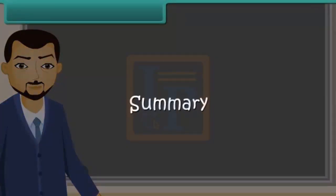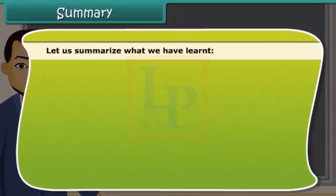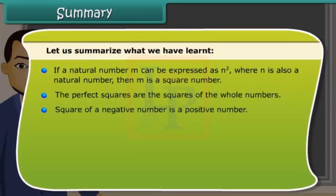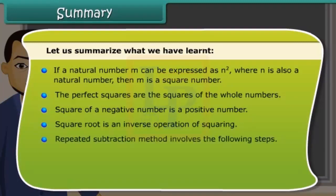Summary. Let us summarize what we have learned. If a natural number M can be expressed as N square, where N is also a natural number, then M is a square number. The perfect squares are the squares of the whole numbers. Square of a negative number is a positive number. Square root is an inverse operation of squaring.